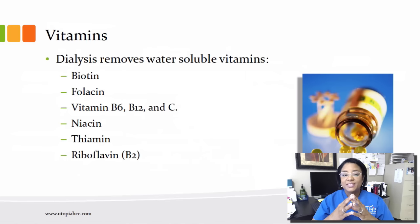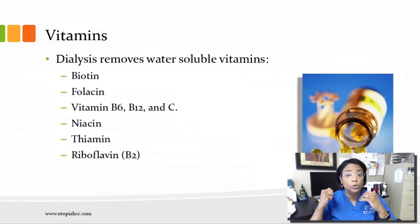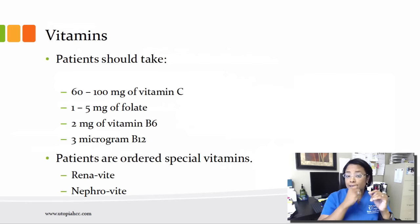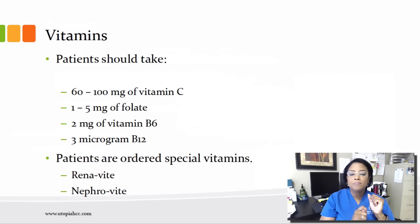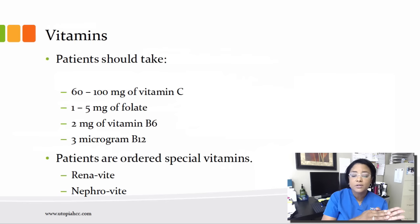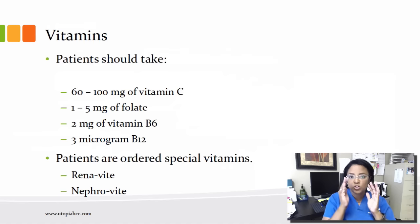In terms of vitamins, dialysis patients lose mostly water-soluble vitamins: biotin, folacin, vitamin B6, B12 and C, niacin, thiamin, and riboflavin (B2). Patients should take 60 to 100 milligrams of vitamin C, 1 to 5 milligrams of folate, 2 milligrams of vitamin B6, and 3 micrograms of vitamin B12. Patients are ordered special vitamins that may come with the name Renovite or Nephrovite. Dialysis patients cannot take over-the-counter vitamins — they should have their special vitamins ordered.